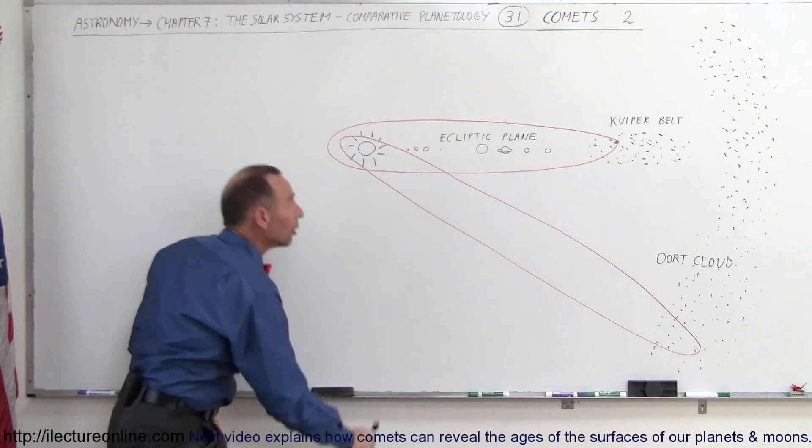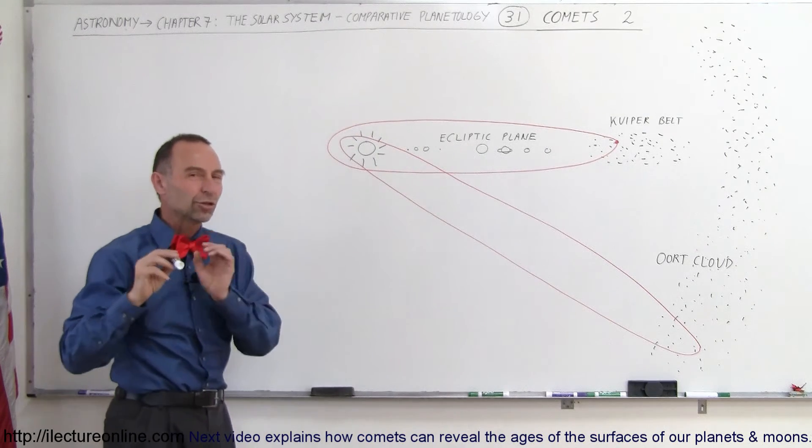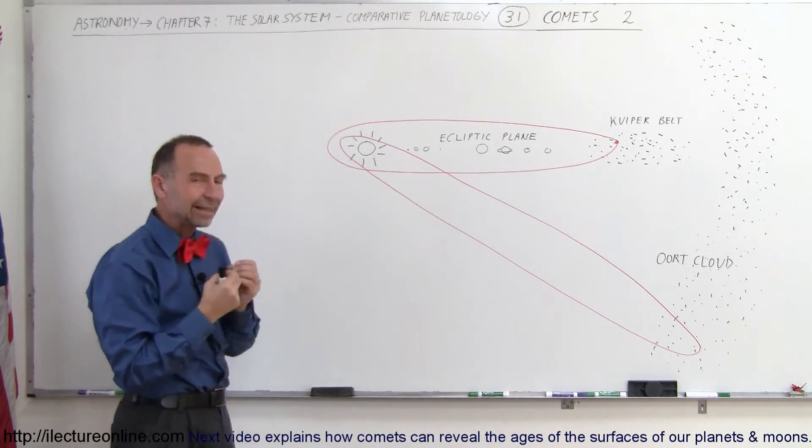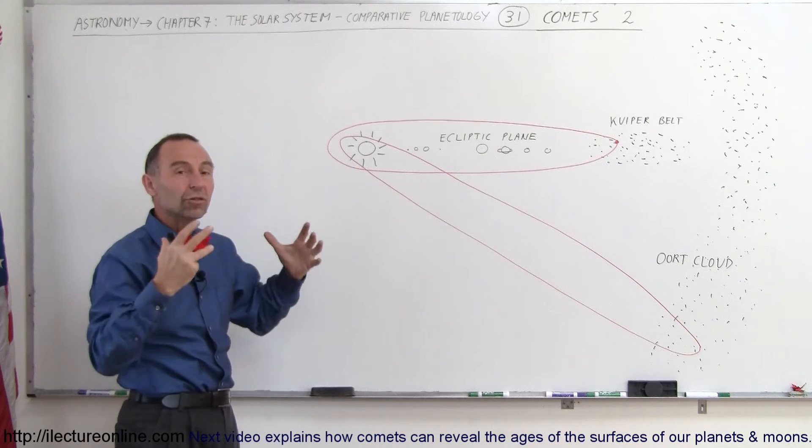It can come from way down here, go around the Sun like that, and go back. So we know that that one could not have come from the Kuiper Belt, and that kind of gives it away that there's this other region, spherical region.